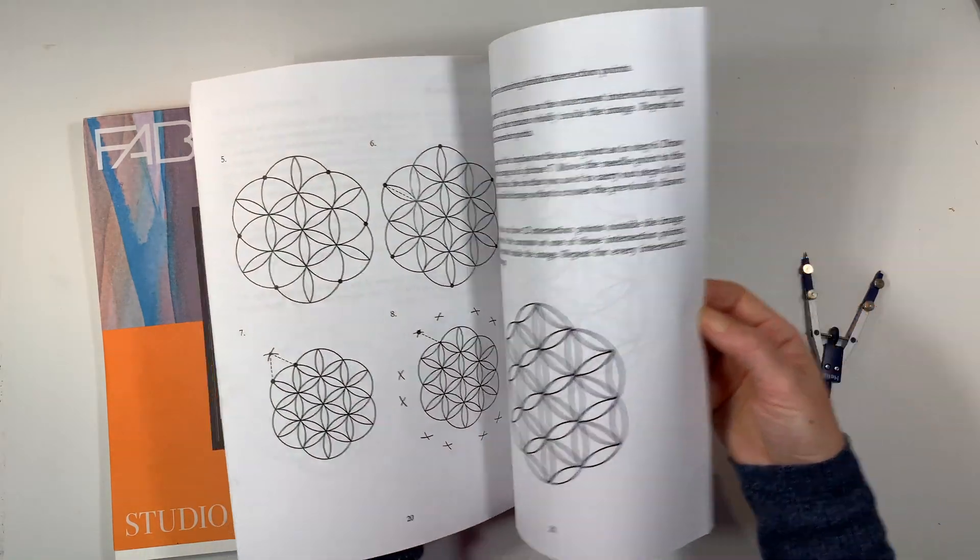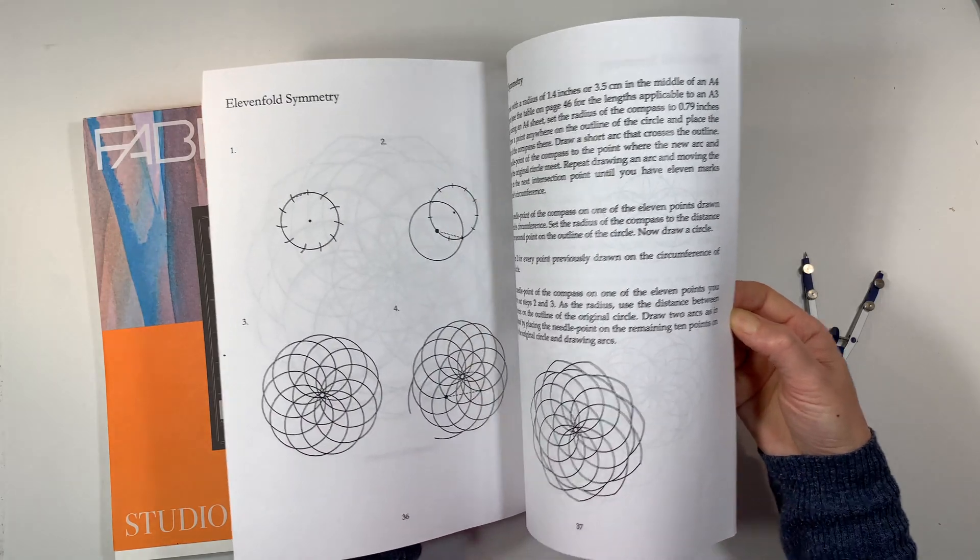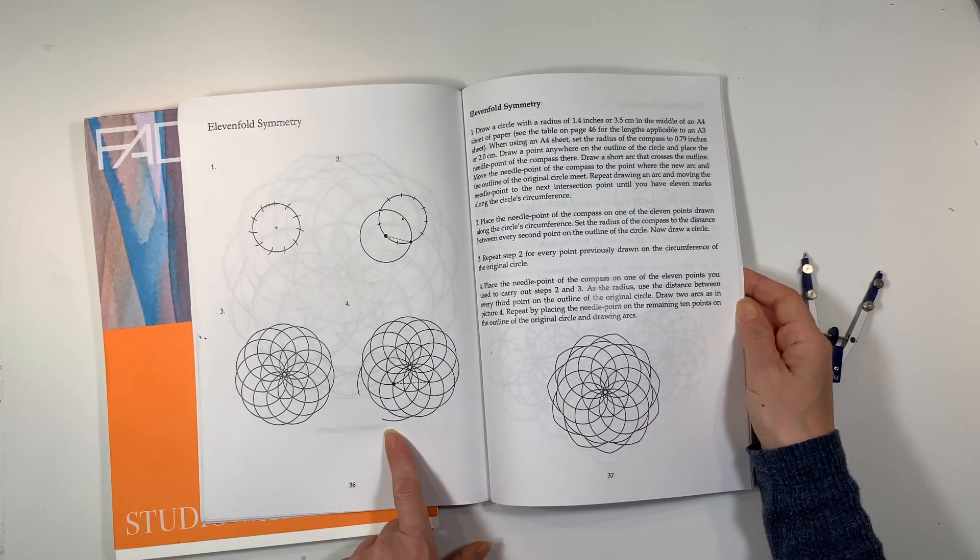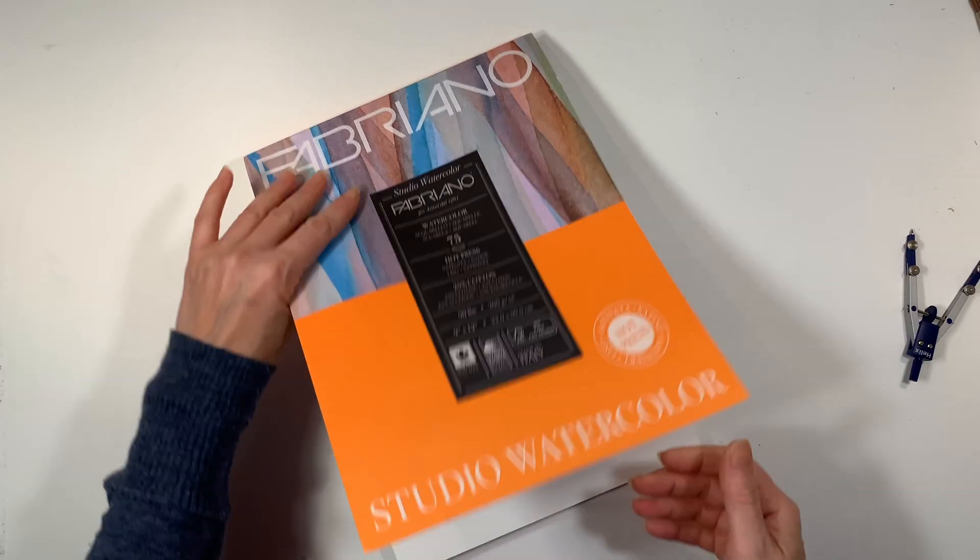We are working through our Waldorf Geometry main lesson block and we're finding a lot of inspiration from this additional resource called Drawing Circle Images. This book goes from 3-fold symmetry up to 12-fold symmetry, and today I'm going to show you 11-fold symmetry.